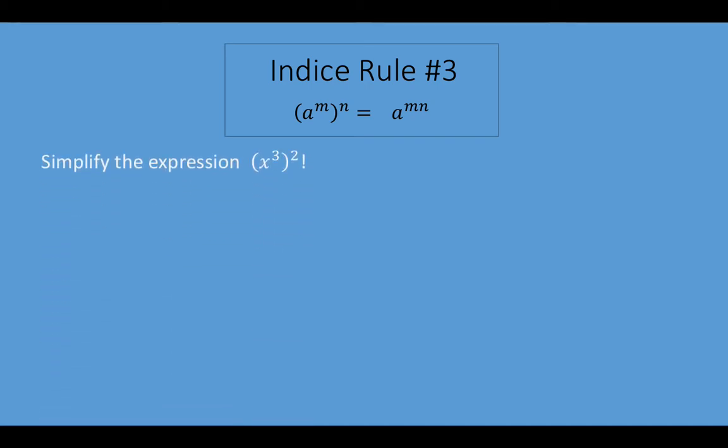So let's simplify the expression where we have x cubed all squared. What we should remember here is that x cubed is simply x times x times x. We also know that if you take a term and square it, it means you have to multiply it by itself.